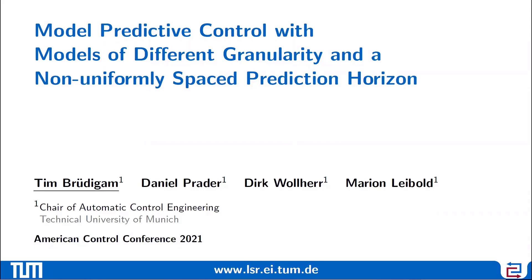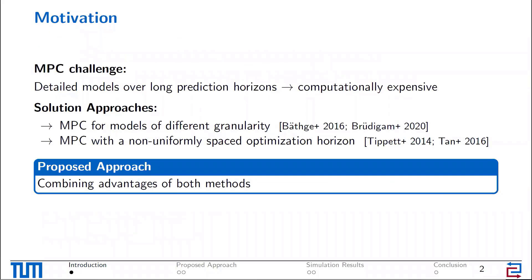Welcome to this virtual ACC presentation. My name is Tim Brüdiger, and I will present our work on MPC with models of differing granularity and a non-uniformly spaced prediction horizon, carried out with Daniel Prader, Dirk Wollherr, and Marin Leibold. We would all like detailed models over long prediction horizons in MPC, but this is computationally expensive. Solution approaches include using models of different granularity or spacing the optimization horizon differently. We propose combining the advantages of both methods.